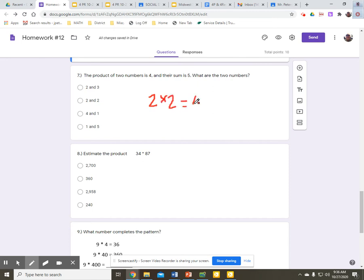So that checks out for the product. But if I take those same numbers, two plus two, to get their sum, that also gives me four. But in my problem, I need five.